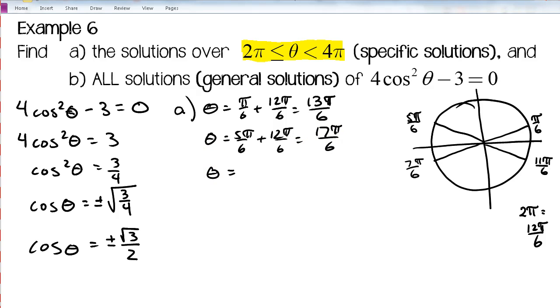And then we would continue doing the same thing for the other two values. 7π over 6 plus a full revolution around, that gives us 19π over 6. And the last value, 11π over 6 plus 12π over 6, is going to give us 23π over 6. So these would be our four solutions over the interval 2π to 4π.